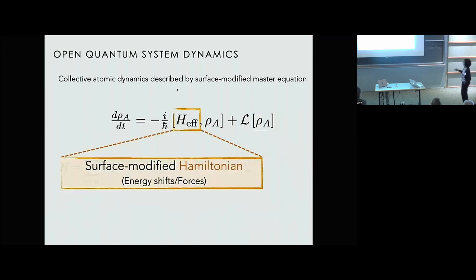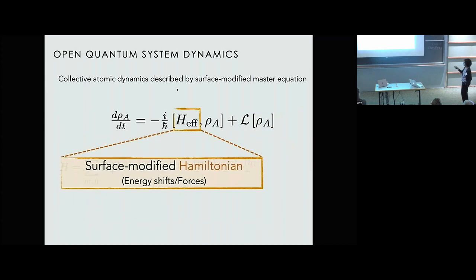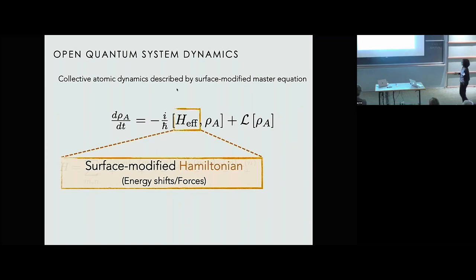And what we can do now, of course, is we can eliminate the environment. And this allows us to write an effective master equation for the dynamics of our system of interest. So this master equation now describes the collective dynamics of the atomic system. And it contains two parts, as you can see. So the first part tells me how the energy shifts and forces are modified in the presence of the surface. And the second part is the Lindbladian, which tells us how the surface modifies the dissipation and decoherence of the quantum system. And what we are interested in for now is the forces. So we'll focus on the first part of this master equation.